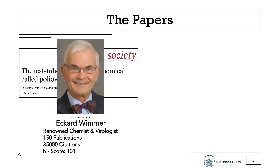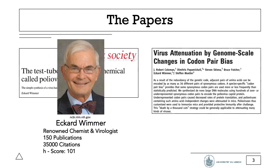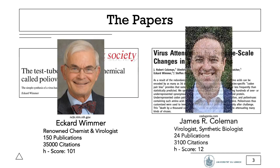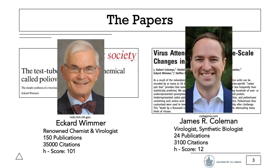He was born shortly before the second world war, but is still alive and well today and involved in research. The second paper is a report by a group of scientists, published in 2008, and describes a novel method of virus attenuation capable of changing its fitness and speed of replication in the host without making a single change to the viral proteins or restricting the range of antigens presented, while severely limiting the chance of reversion. It was written by James Coleman and a few other authors, among those Eckerd Wimmer as well, but Coleman is designated as the main author.